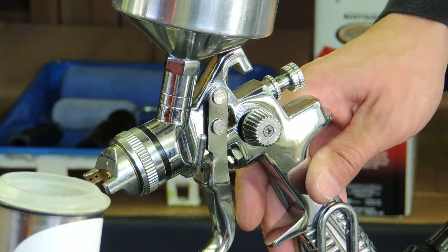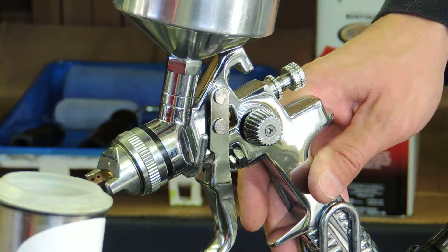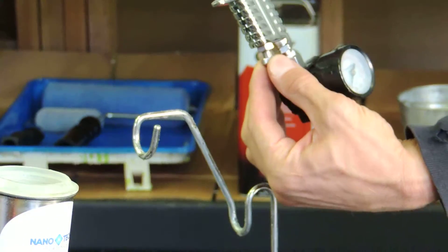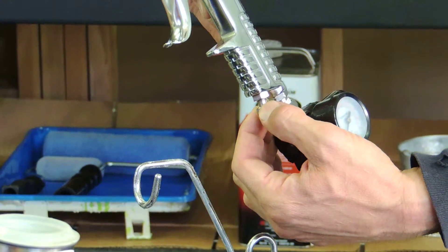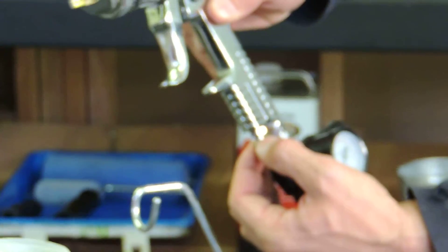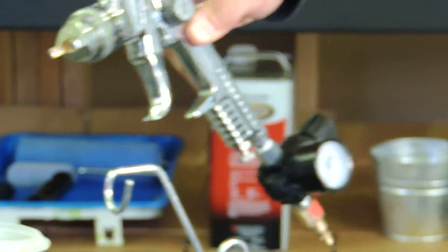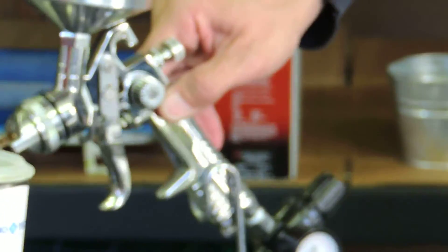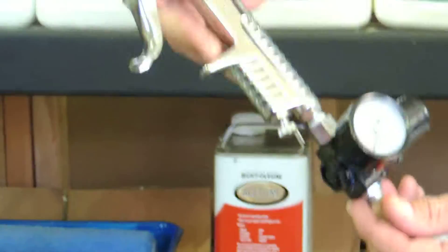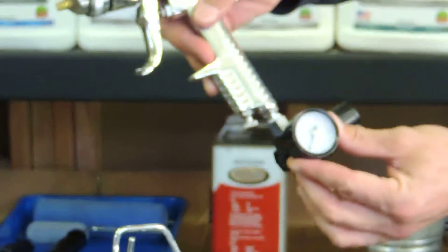This knob on the bottom is the air pressure adjustment knob. You can decrease or increase the air pressure for the gun. Now I recommend having a regulator - it's not necessary, but these air regulators are nice.